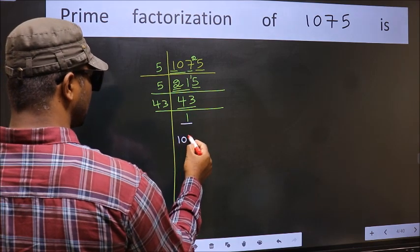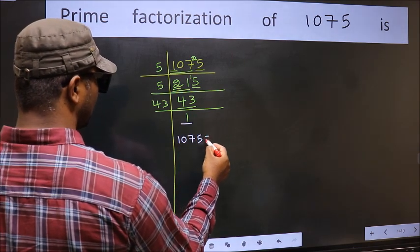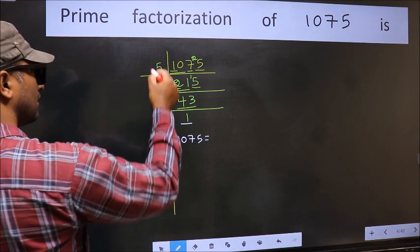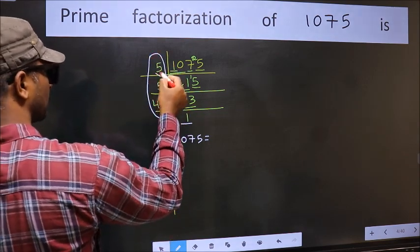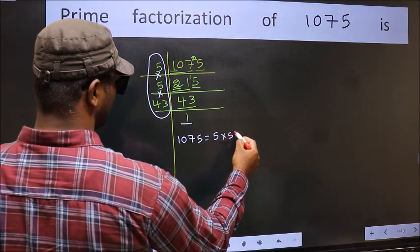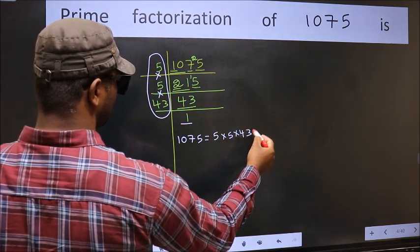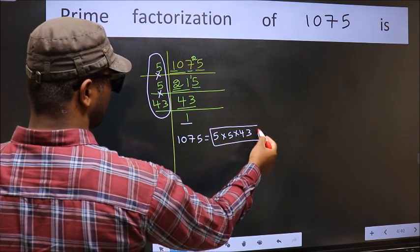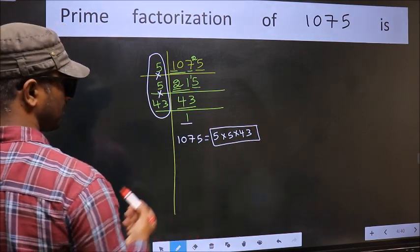So the prime factorization of 1075 is the product of these numbers, that is 5 into 5 into 43. So this is the prime factorization of 1075.